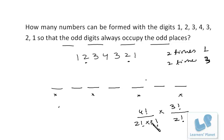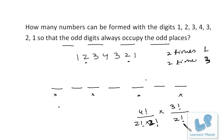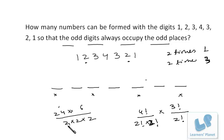So the full calculation is: 4 factorial over (2 factorial times 2 factorial) for the odd digits, multiplied by 3 factorial over 2 factorial for the remaining digits. That is 24 over 4, times 6 over 2 — which is 6 times 3 — giving us 18 numbers in total in which the odd digits always occupy the odd places.